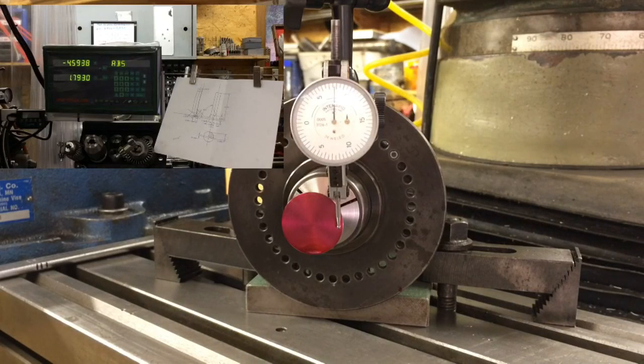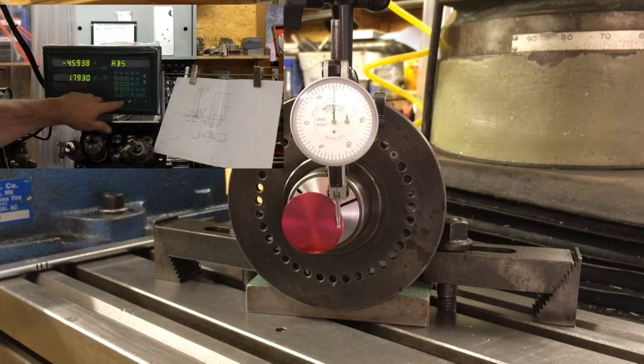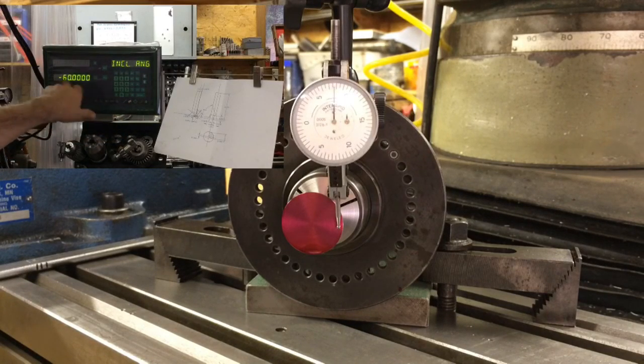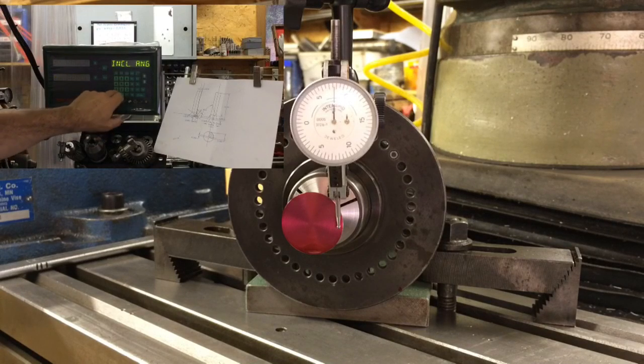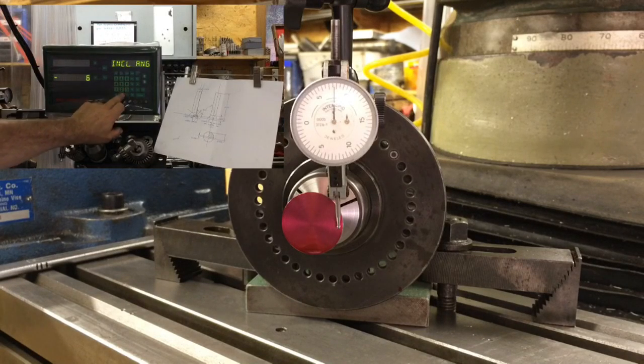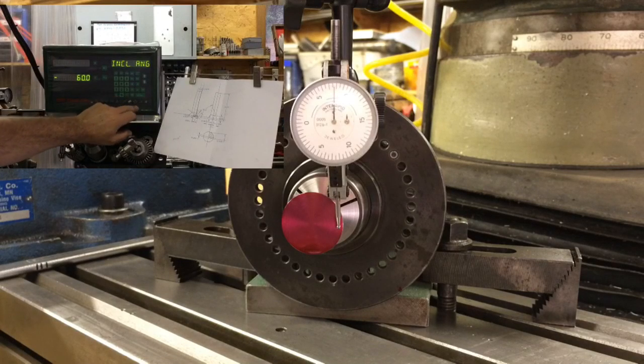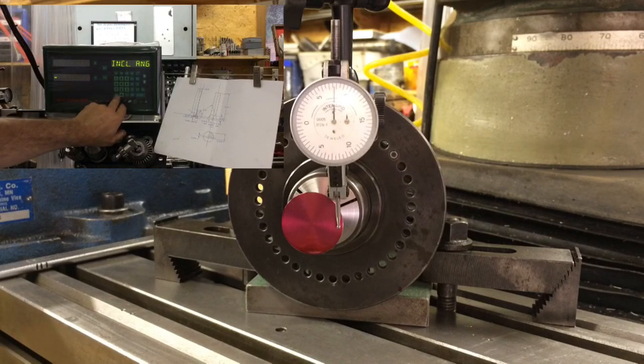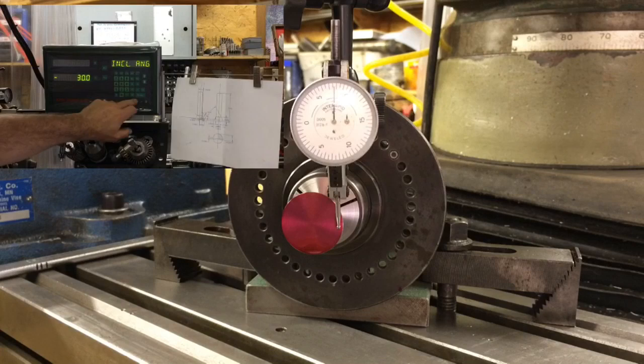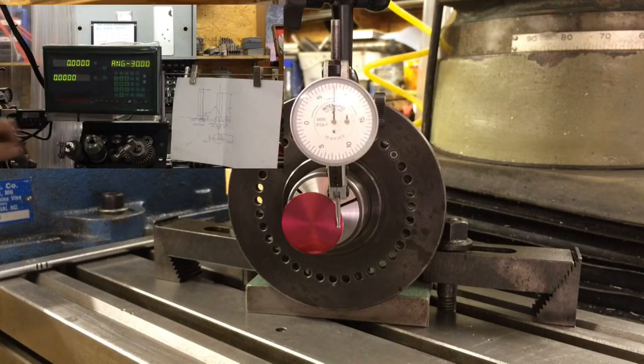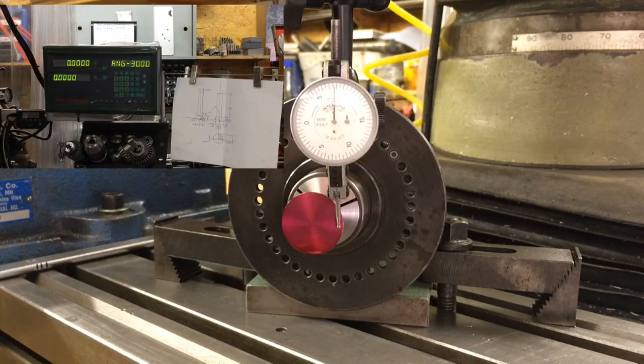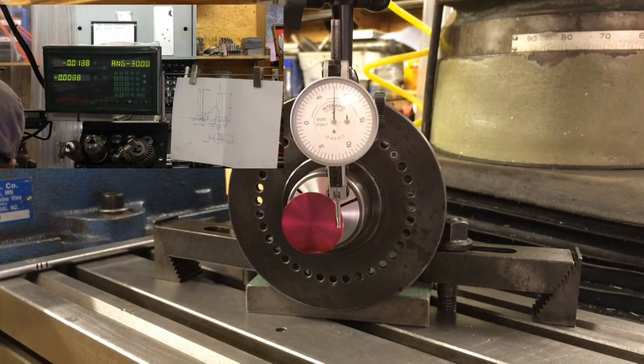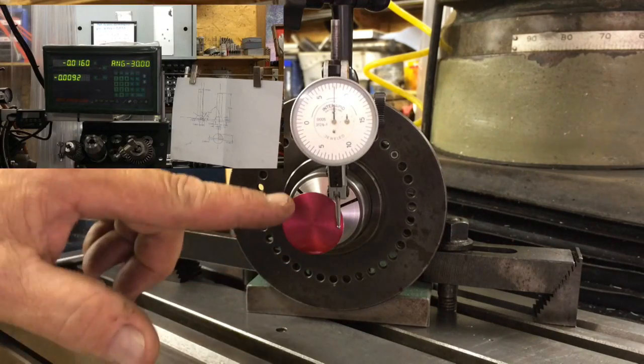We're gonna use the DRO to do this. So I'm gonna select the incline tool. My angle is gonna be minus 30. There we go. Okay, now it says zero-zero.